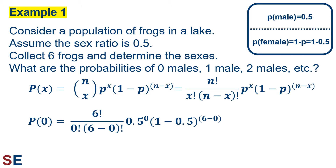We can look at our binomial probability equation where x will be 0, 1, 2, etc., and n will be 6. The probability of success will be 0.5. Plugging those numbers in for the situation where we calculate the probability of seeing 0 males would give us 6 factorial divided by 0 factorial times 6 minus 0 factorial, all multiplied by 0.5 to the 0 power times 1 minus 0.5 raised to the 6 minus 0 power.